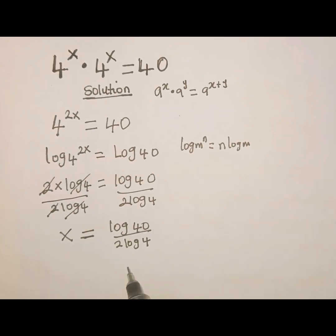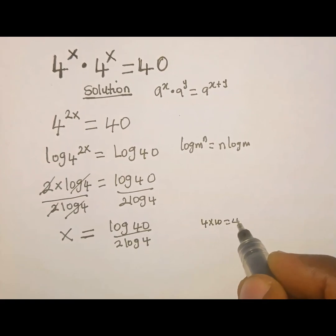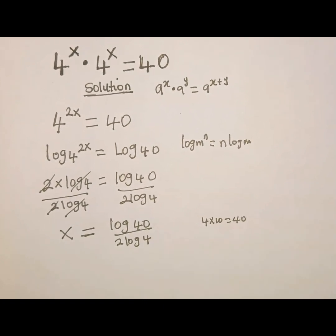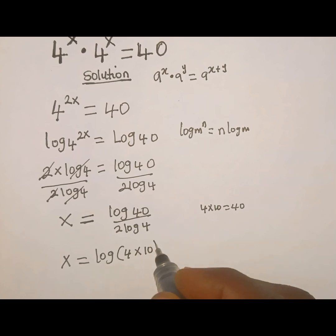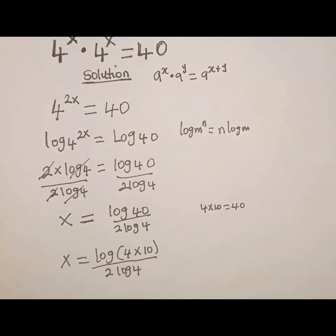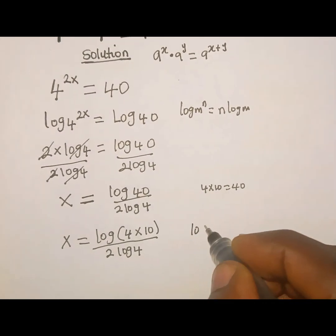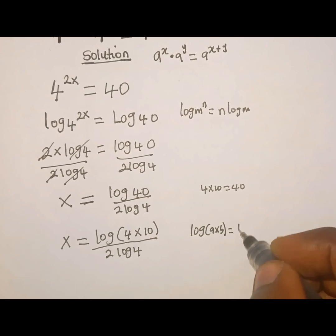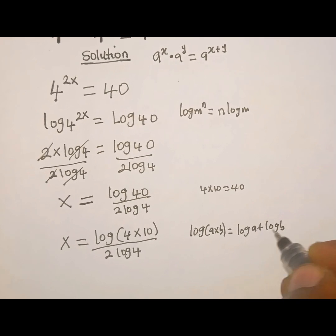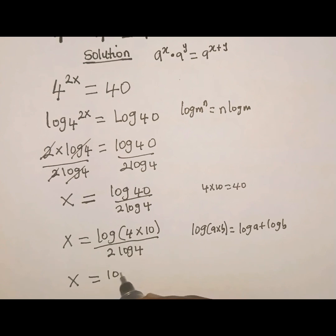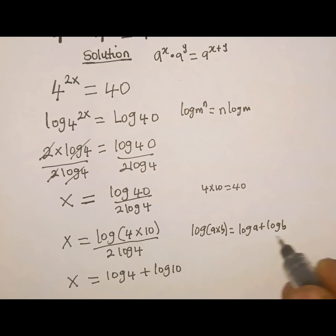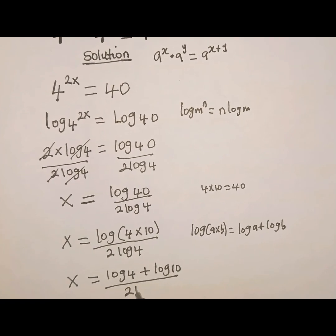We are not going to stop here — we are going to simplify further. We recall that 40 can also be written as 4 multiplied by 10. So we rewrite 40 as 4 multiplied by 10. When we do that, x will be equal to log of 4 multiplied by 10, all over 2 log 4. We then recall the property that log of a multiplied by b equals log of a plus log of b. Applying this to the numerator, x equals log of 4 plus log of 10, all over 2 log 4.